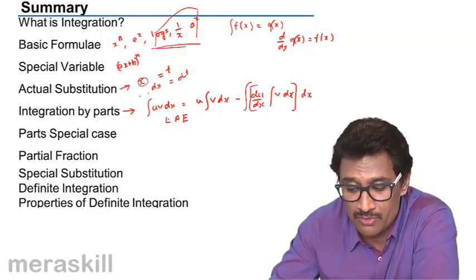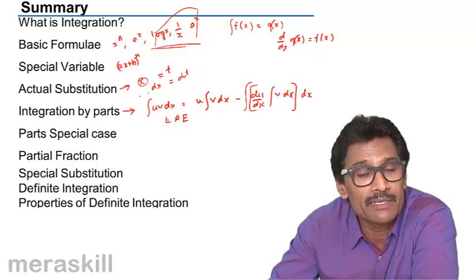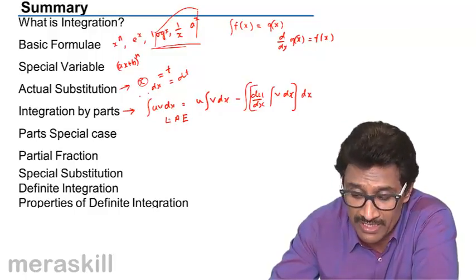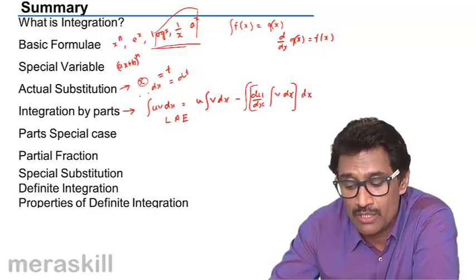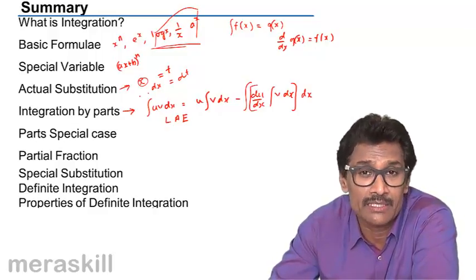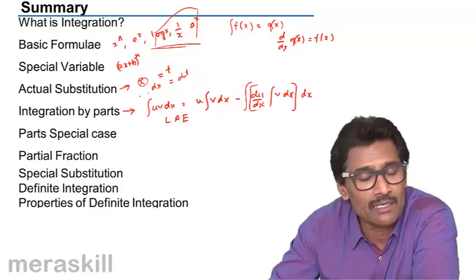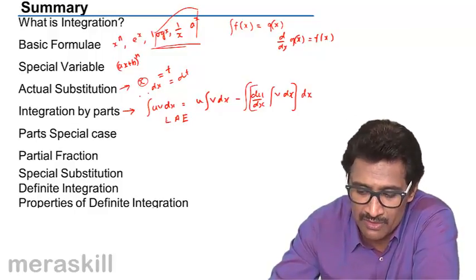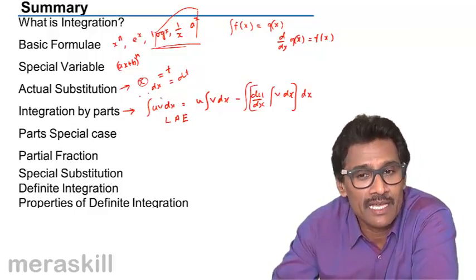In case there is a tie between L, A, and E, it's a combination. So logarithmic function, if it is around, you have to take that as u. If it is not, arithmetic function has to be taken as u, and then comes exponential. It is in this order - whichever comes among these has to be taken as u.